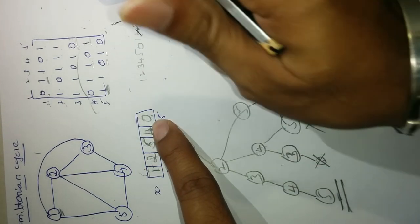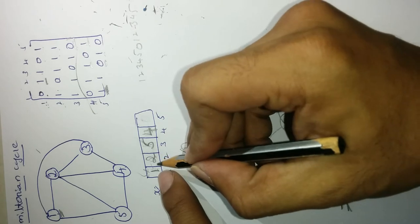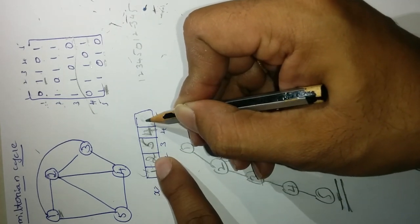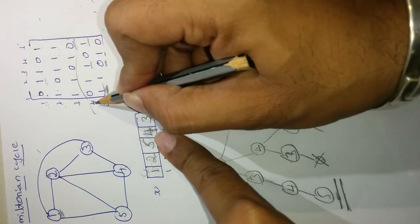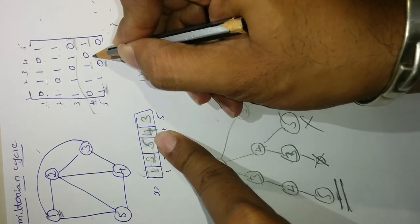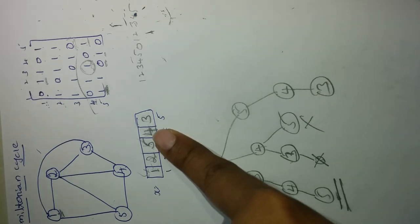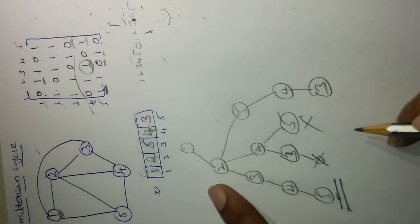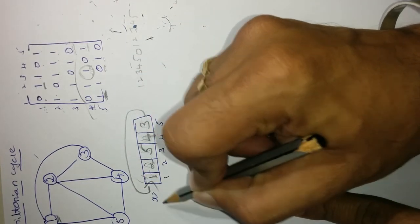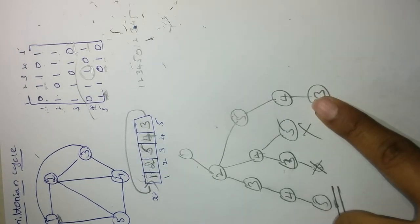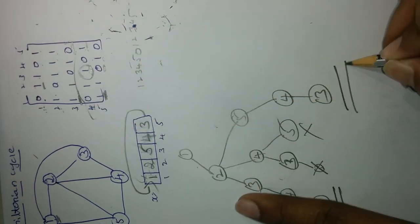Continuing: for position 4 with 5 in position 3, values 1, 2, 5, and 4 are used. Only 3 remains. Check edge 4 to 3: yes, there is an edge. Place 3 in position 4. For position 5, only value remaining is... we verify: check edge 3 to 1 to confirm the Hamilton cycle closes. Yes, there is an edge between 3 and 1, so this solution is valid.